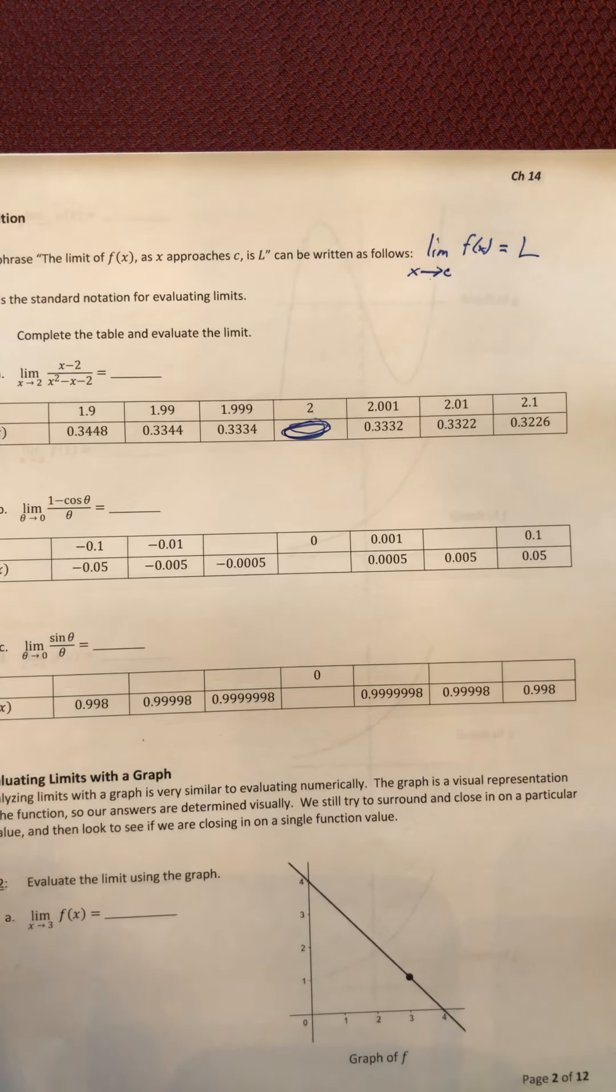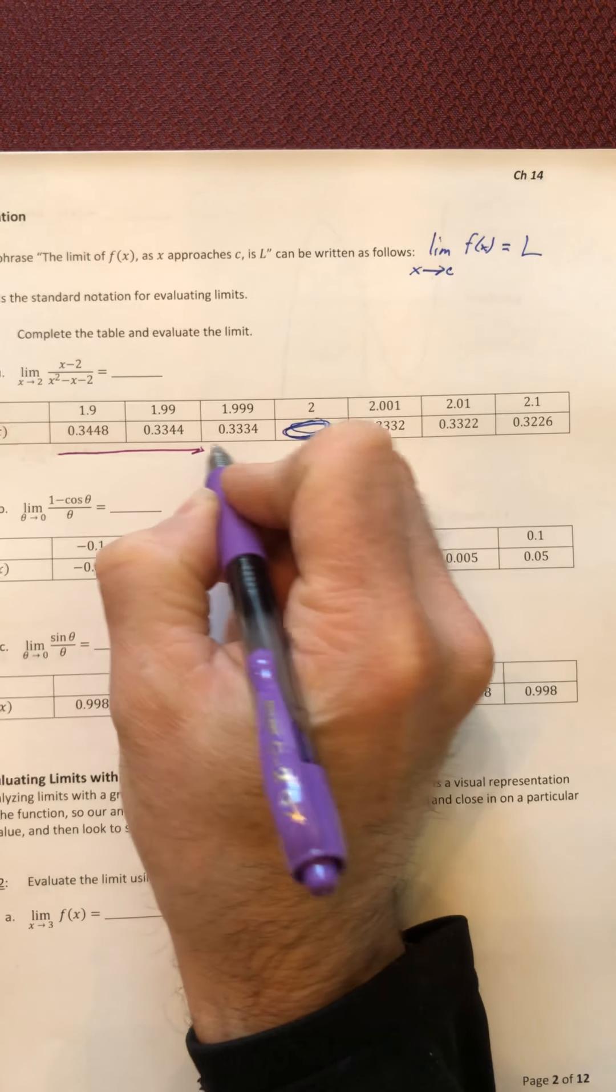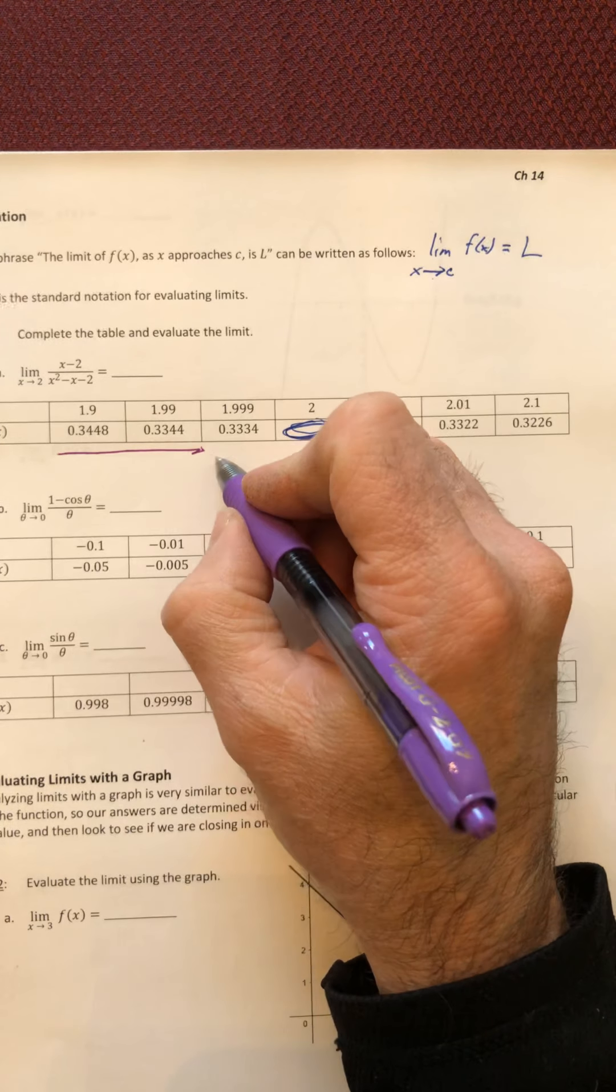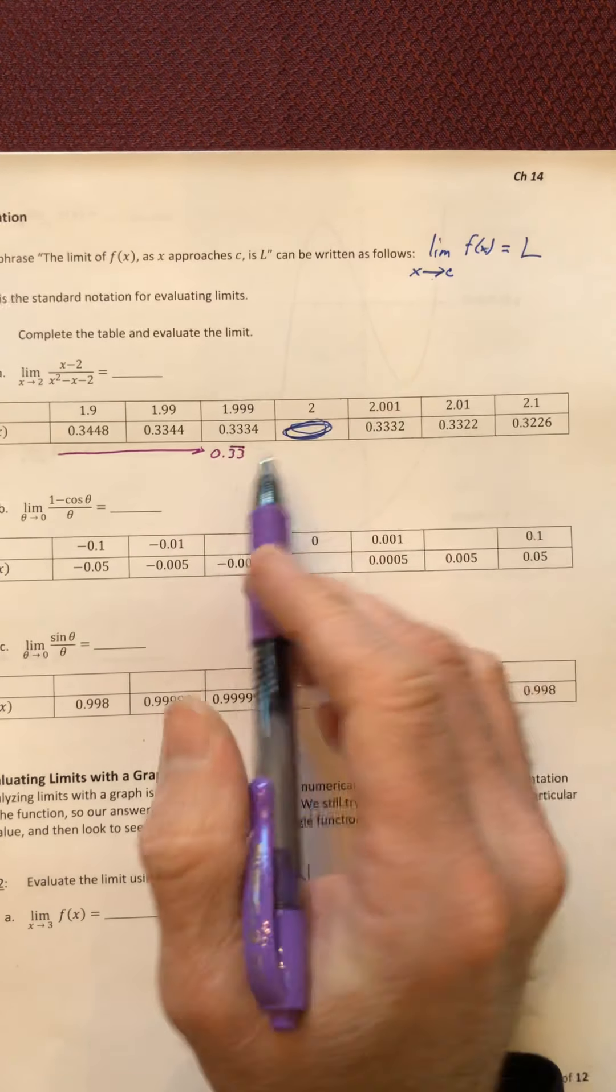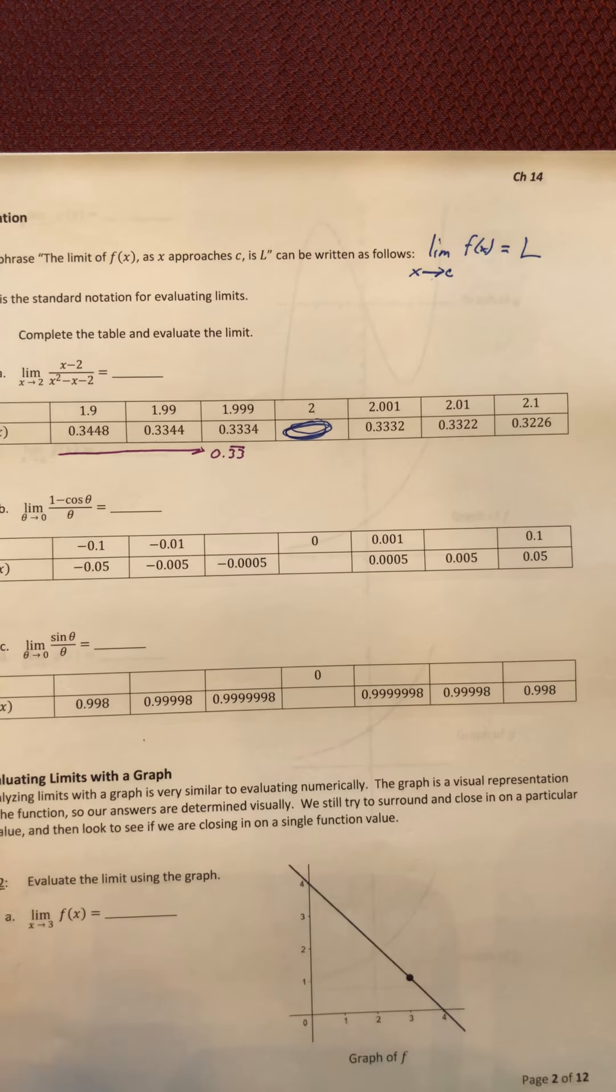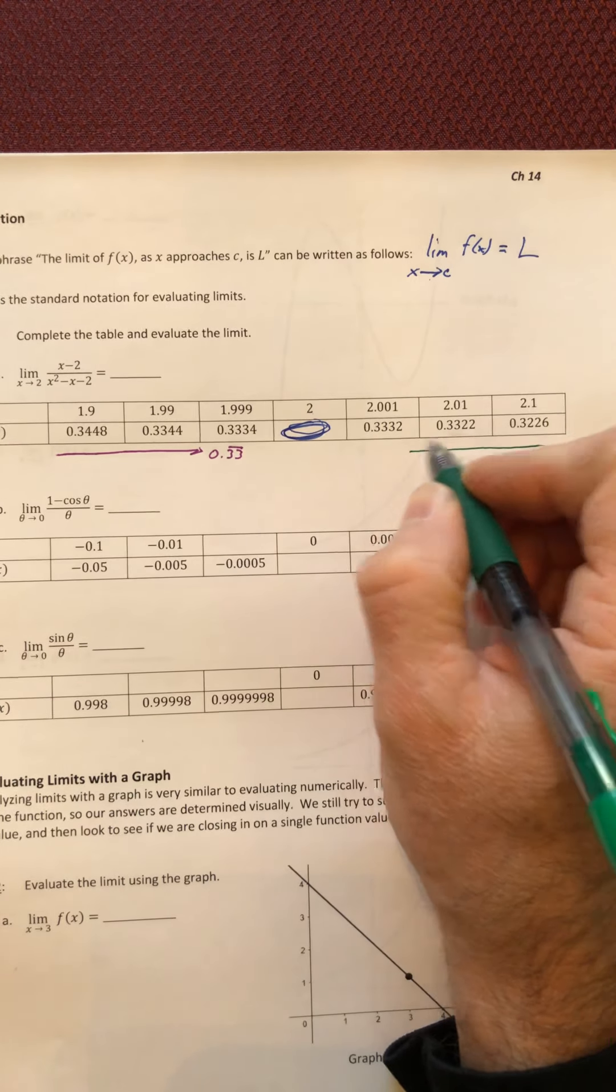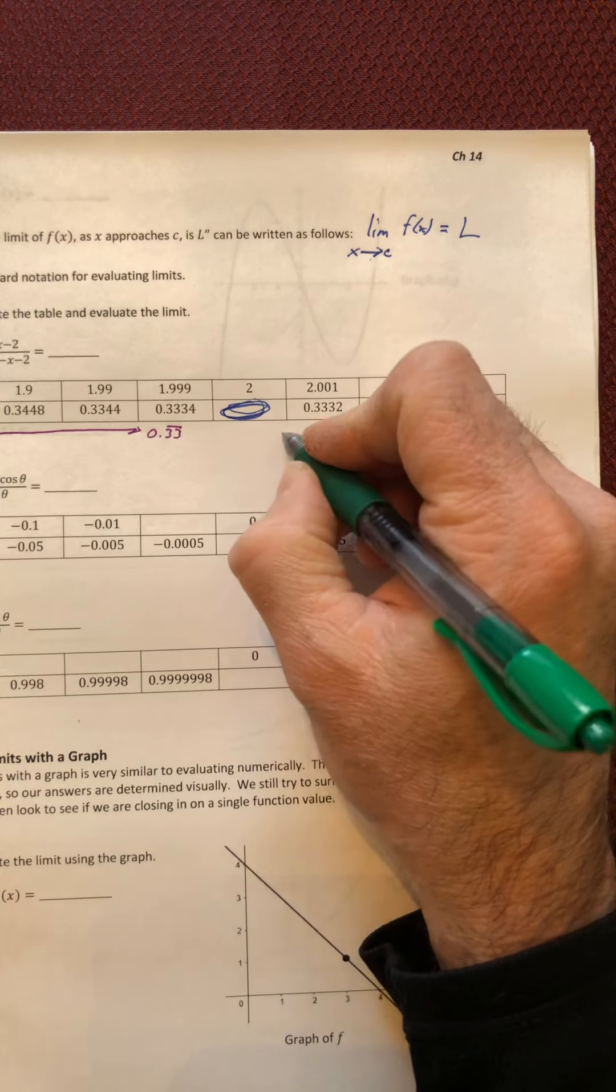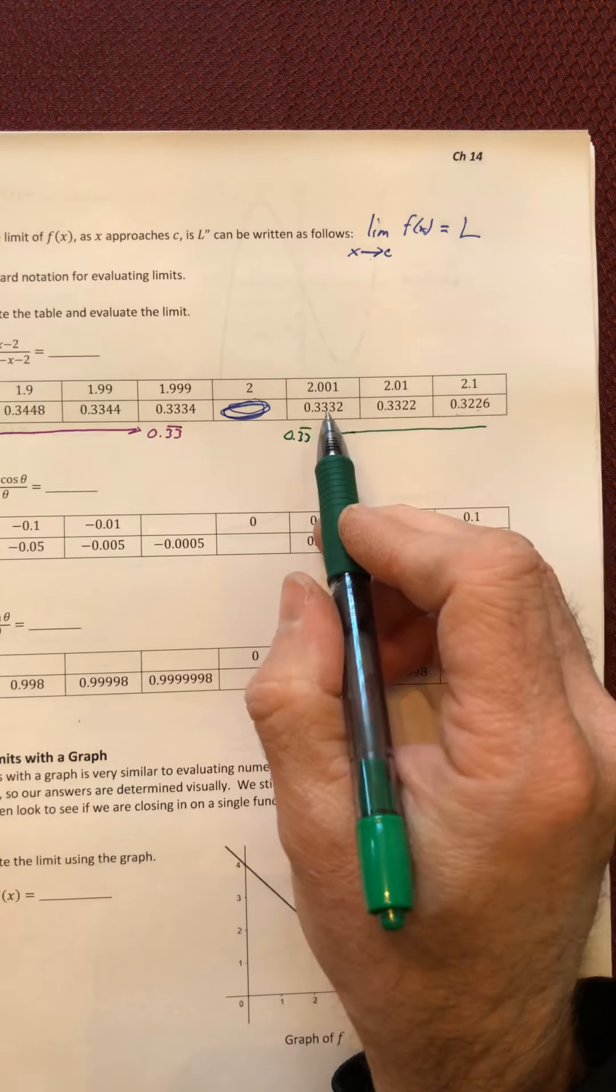Coming in from this side, what does it look like your function values are getting closer and closer to? Well, I would say 0.33 repeating, because they keep adding an extra three. And then on the other side.